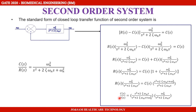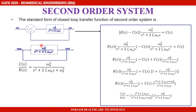The final equation is C(S)/R(S) equal to ωn² divided by s² plus 2τωns plus ωn². This form makes it easier to solve the system. That's why we need to eliminate the closed loop.